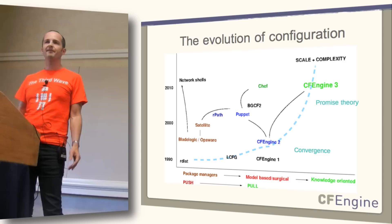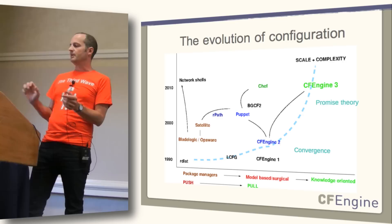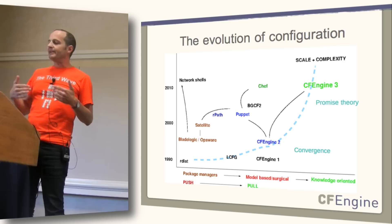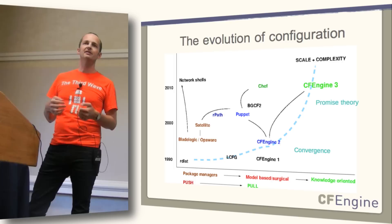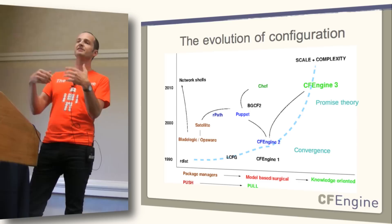The next step was LCFG and CF Engine 1, which around 1993 emerged independently. LCFG was the University of Edinburgh and France; CF Engine 1 was University of Oslo and France. Over the course of the 1990s I developed CF Engine, and in 1998 came up with this idea of self-healing systems and computer immunology, as I called it back then. That gave us the idea of convergence — that a system could be brought back into a desired state by continuously maintaining the state from within.